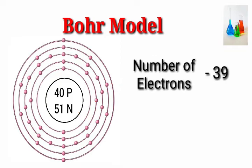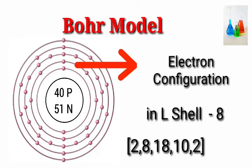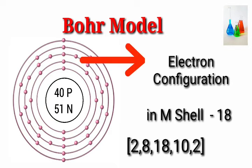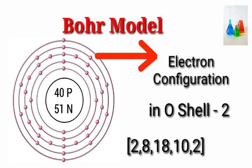Number of electrons: 39. Electron configuration — K shell: 2, L shell: 8, M shell: 18, N shell: 10, O shell: 2.